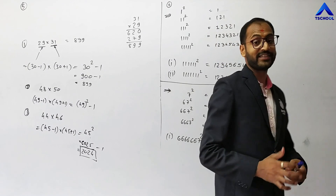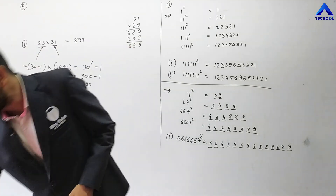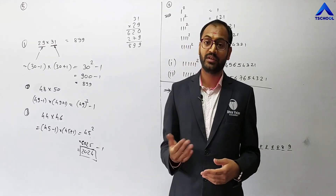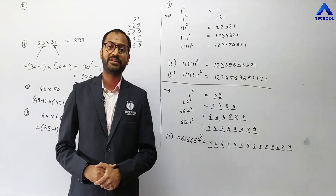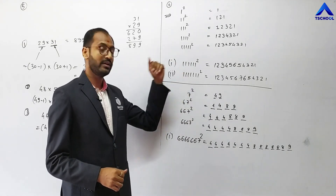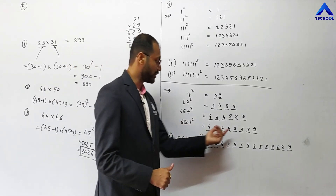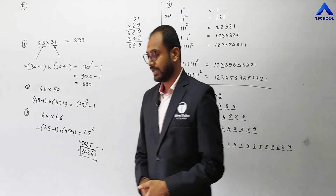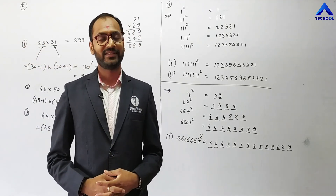Today we have studied some interesting patterns: how we can obtain perfect squares, and how to find the multiplication of consecutive natural numbers, consecutive odd numbers, or consecutive even numbers using short methods. These patterns are very useful for finding squares of bigger numbers using these shortcut digit patterns. In the next lecture, we will solve exercise number 6.1.